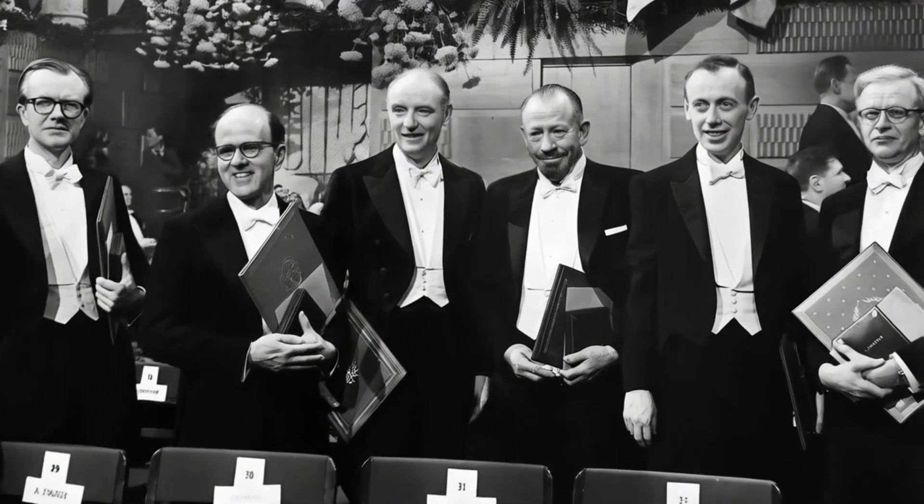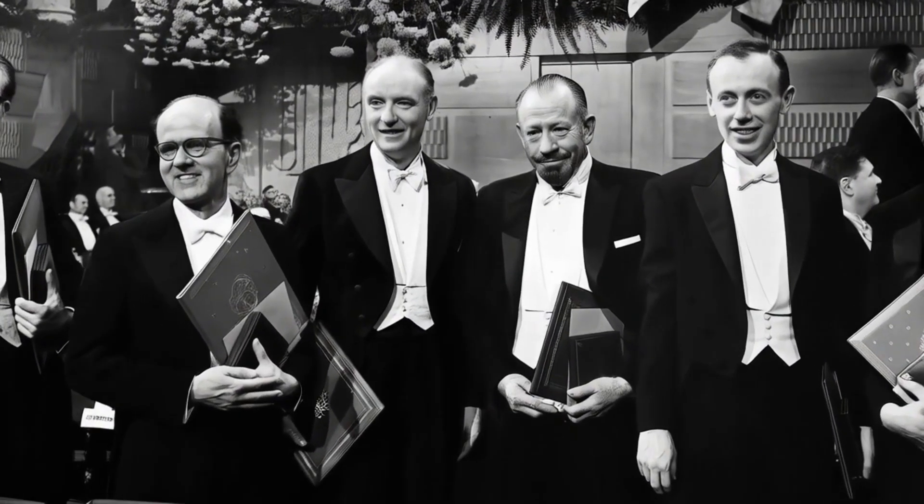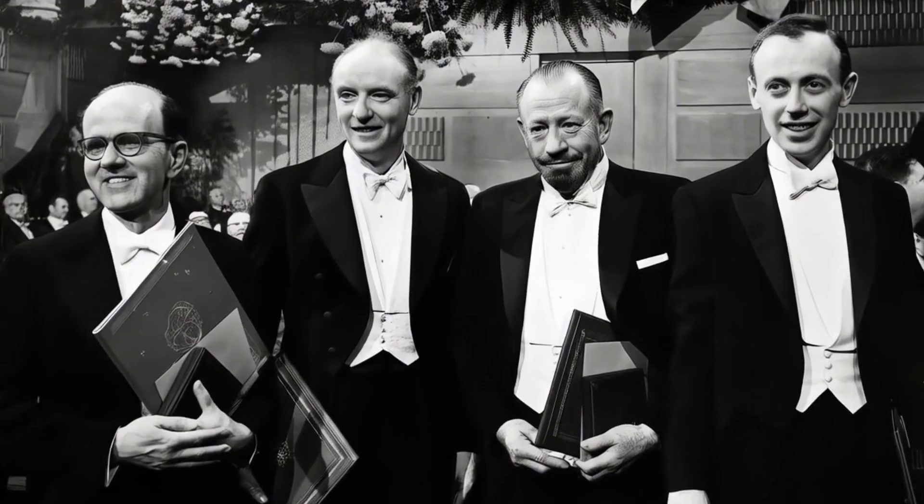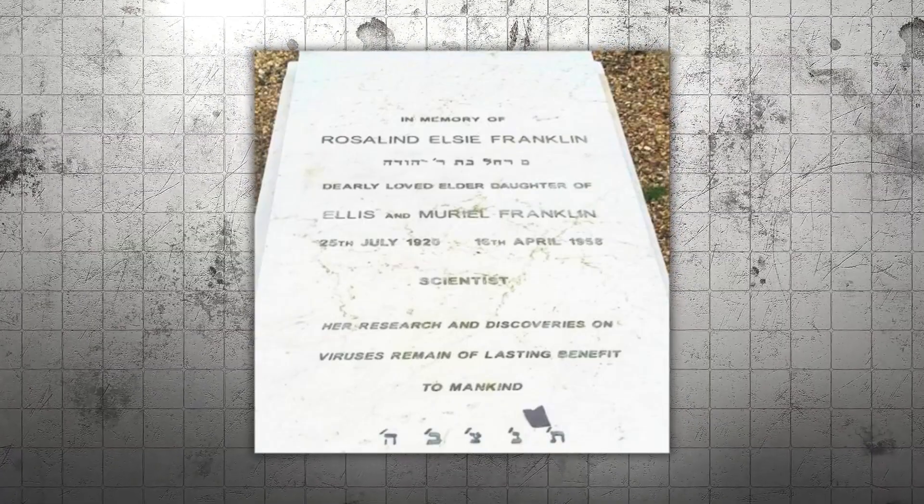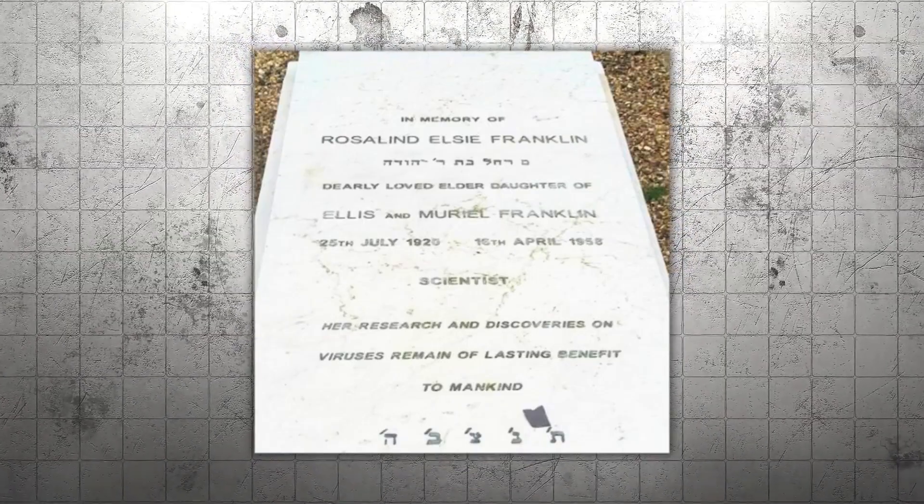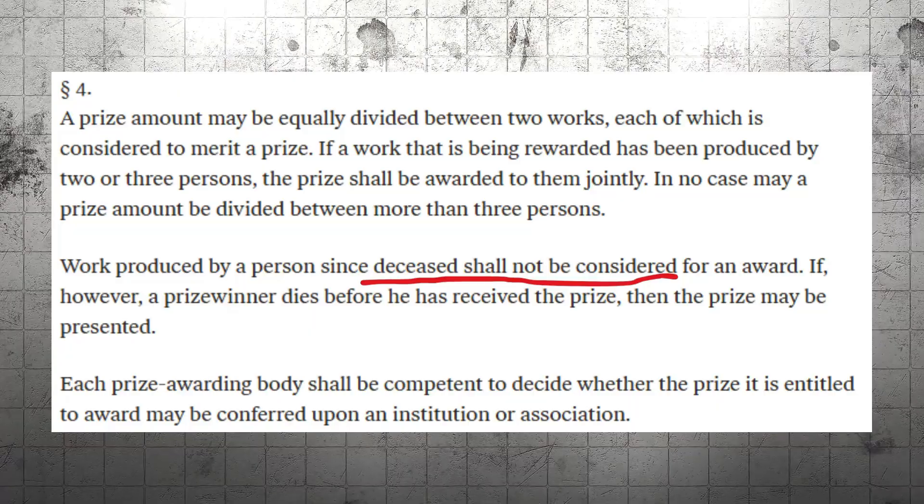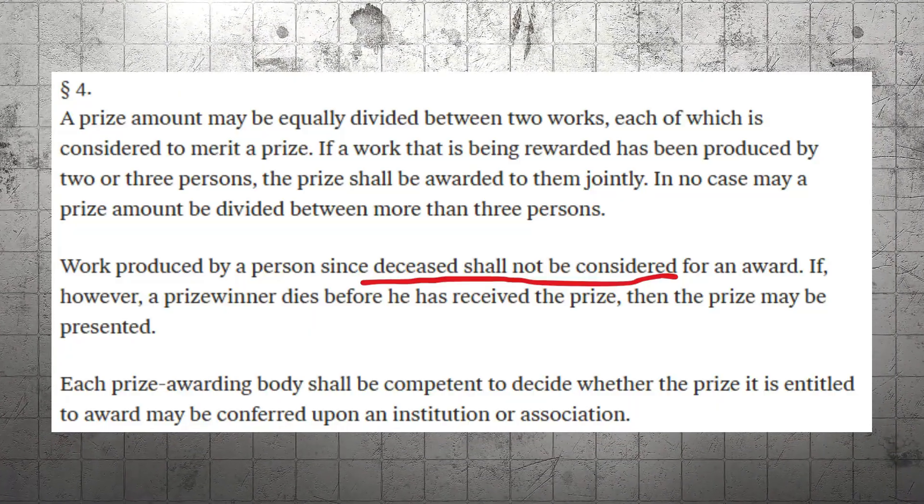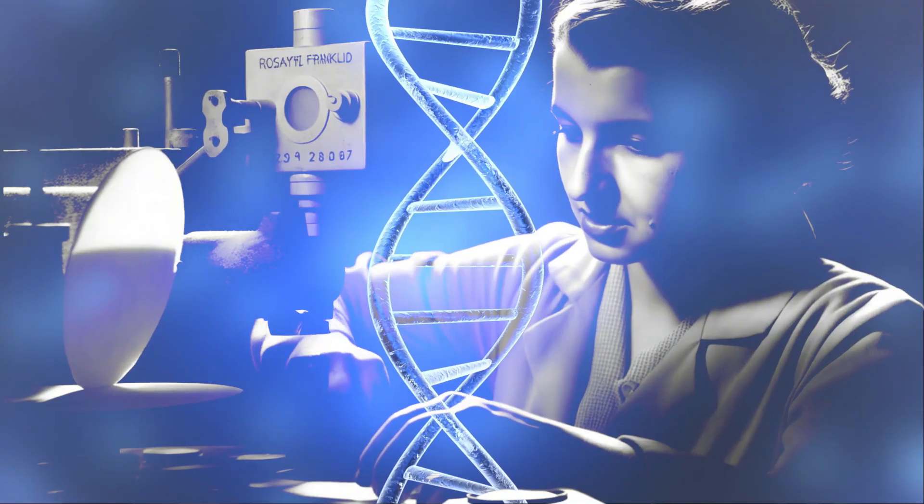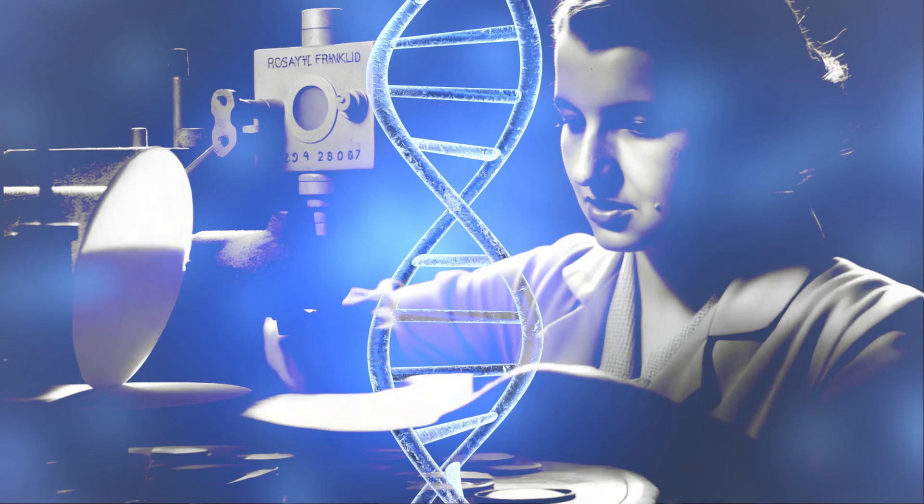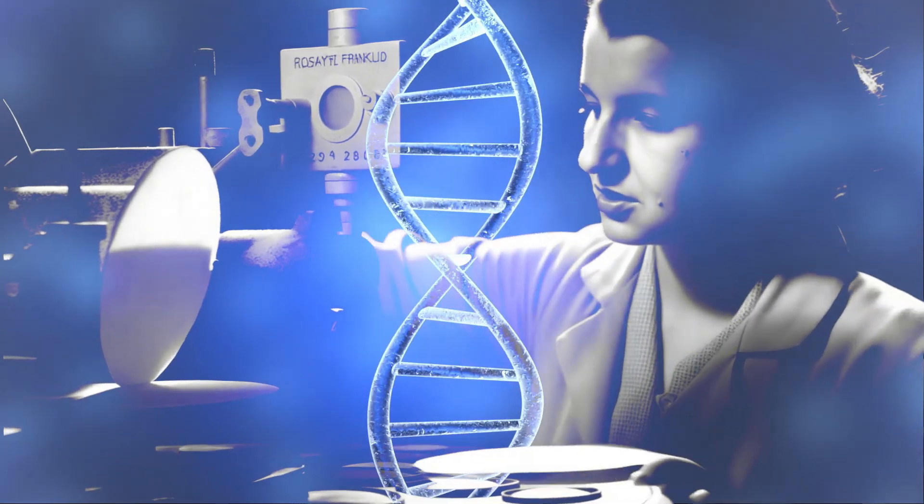Years later, in 1962, the Nobel Prize honored Watson, Crick, and Wilkins. By then, Rosalind Franklin had already passed away from cancer. Nobel rules forbid posthumous awards, leaving her name absent. The discovery of life's most important structure was complete, but history carried a shadow.